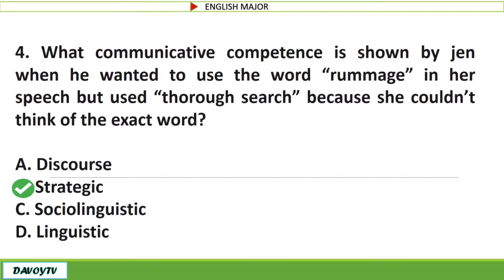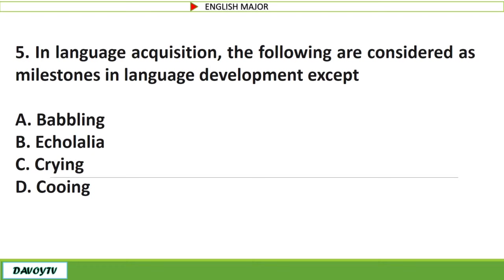Question number 5. In language acquisition, the following are considered as milestones in language development except: A. Babbling. B. Echolalia. C. Crying. D. Cooing. The correct answer is letter B: Echolalia.